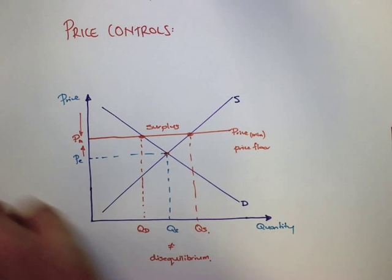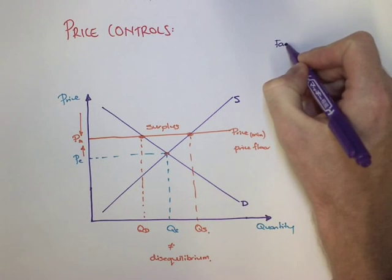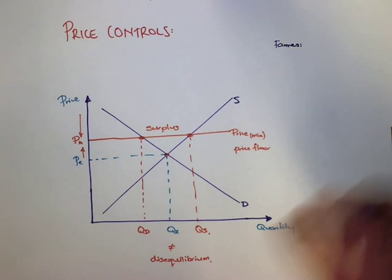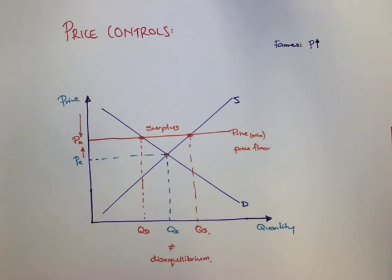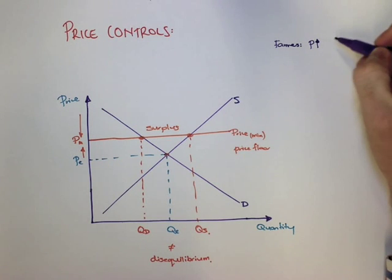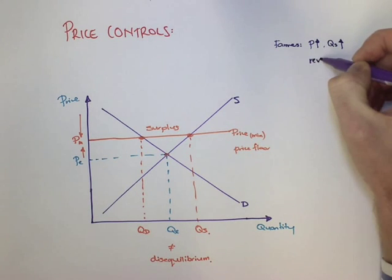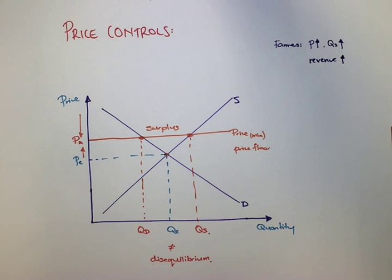We can think of different stakeholders. We have our farmers as one important stakeholder group. What happens to them? Well, the price that they receive has gone up, and also the quantity that's sold has also gone up, so their revenue has also increased significantly.